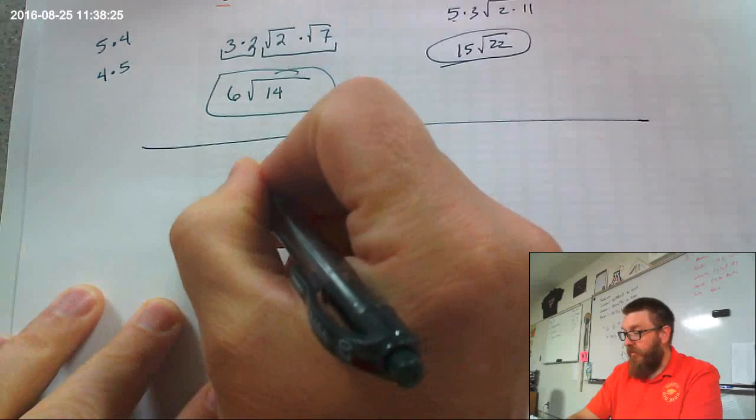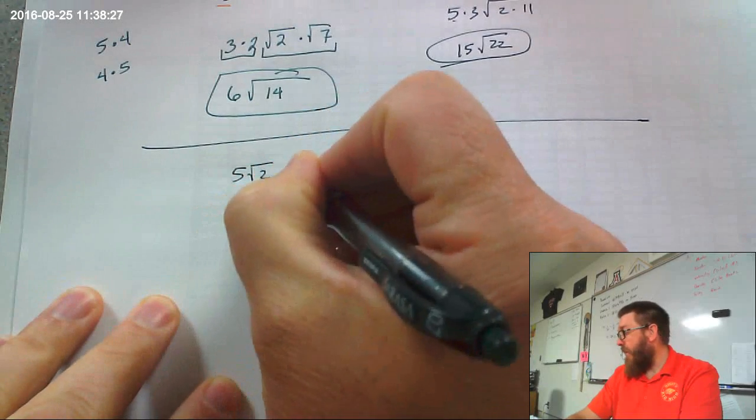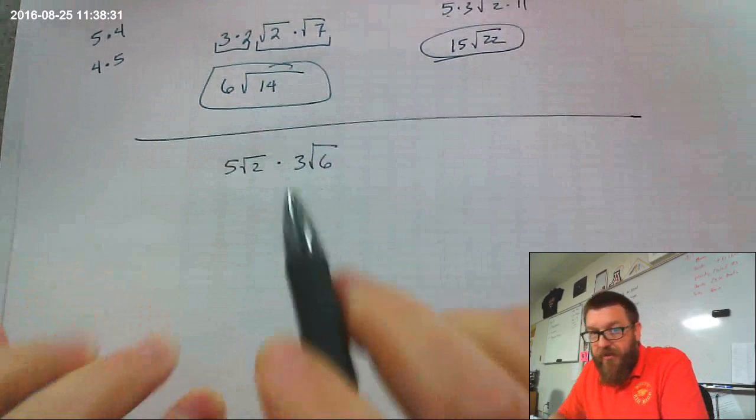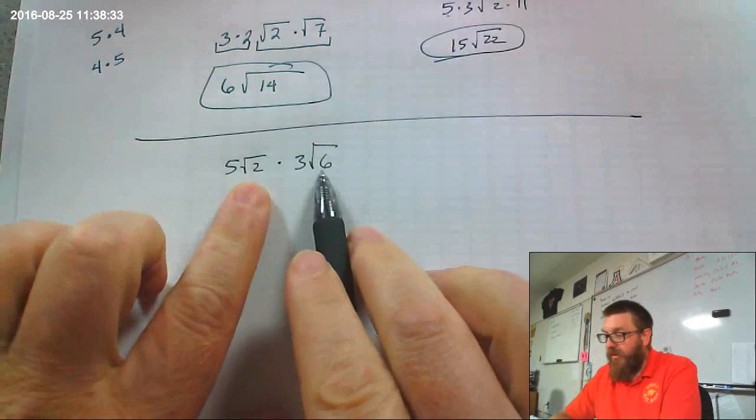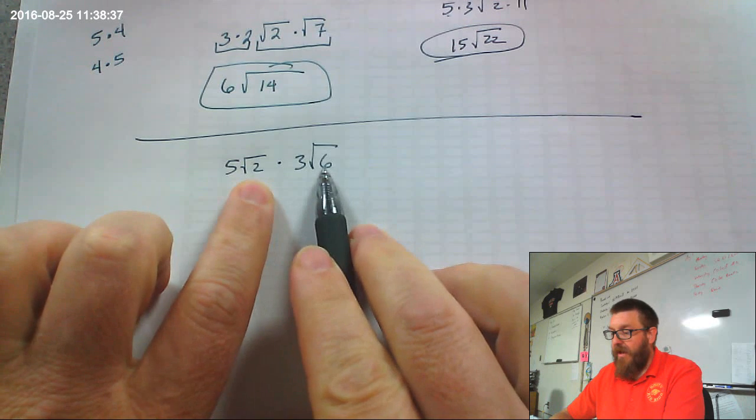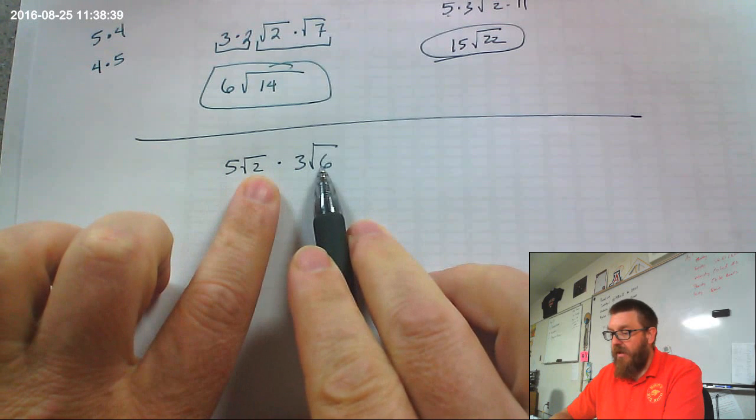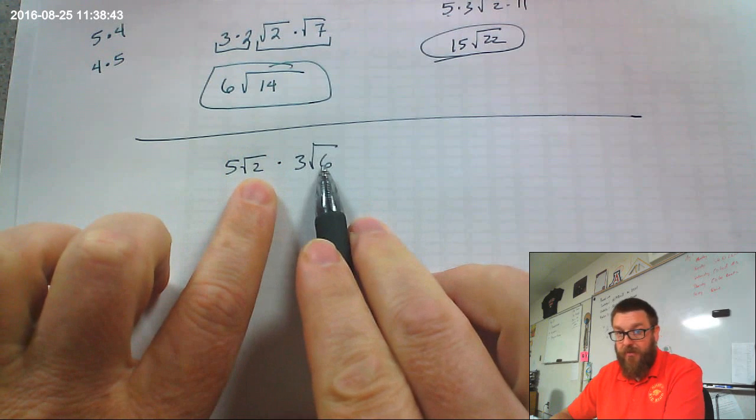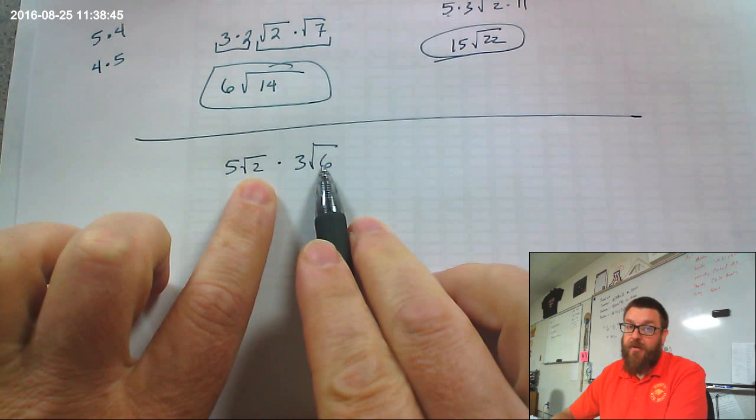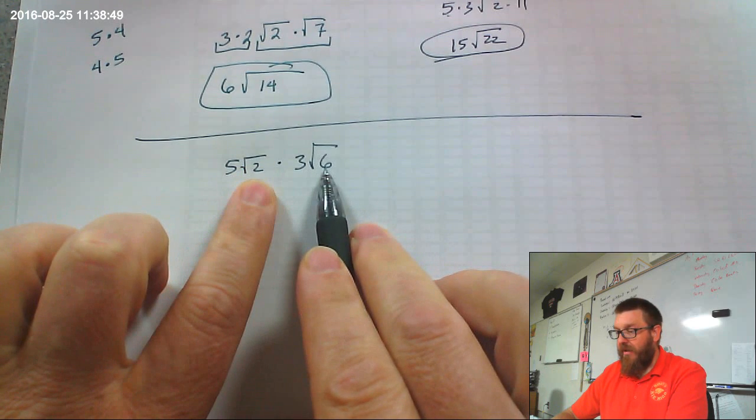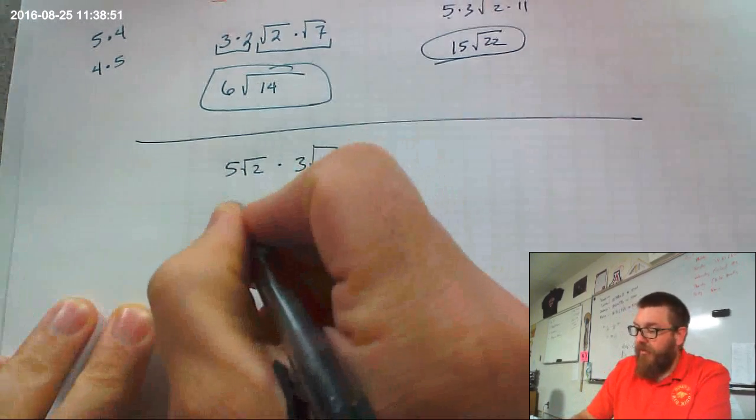Next up. A little bit trickier. Let's do 5 times the square root of 2 again, but this time times 3 times the square root of 6. Now, the reason this one's trickier is because 2 and 6 have a common factor of 2. And so, they actually would multiply together and have a factor of 4. Because, 6 times 2 is 12, but 12 is 4 times 3. And so, you're going to have to simplify this one. So, let's take a little bit of time here.